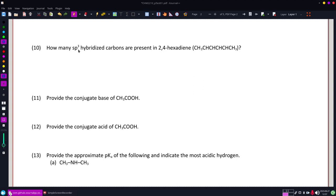All right, on question 10, it wants to know how many sp3 hybridized carbons are present in 2,4-hexadiene, and I have a condensed structure here.